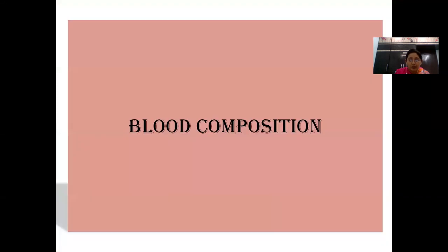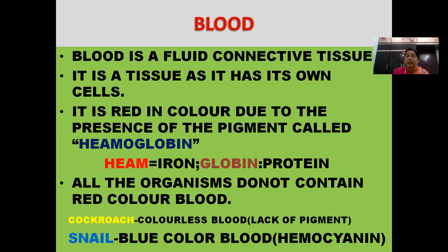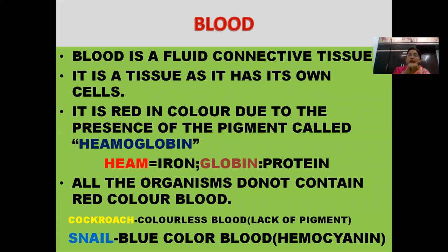Let's begin with the concept of blood composition. What is blood? Blood is a fluid connective tissue. Fluid is a term used to describe liquid or gas, so blood is a liquid and can be called a fluid. It is called a connective tissue because it always circulates in our body and connects all the organs. It can be called a tissue because it has its own cells.